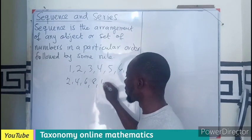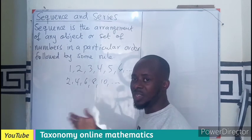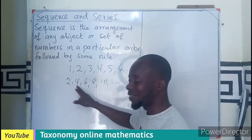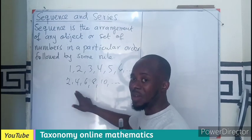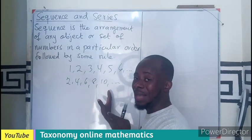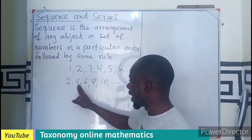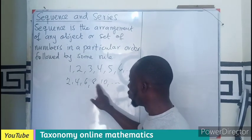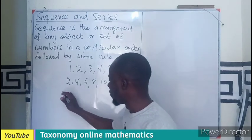We can also look at even numbers. Each preceding term plus two gives the next term, or the next term minus two gives the previous one. For example: 2, 4, 6, 8 — subtracting two each time gives the previous term, in that order.